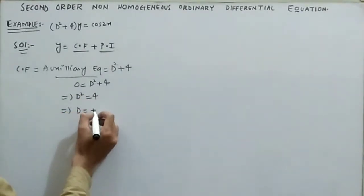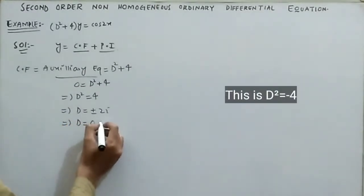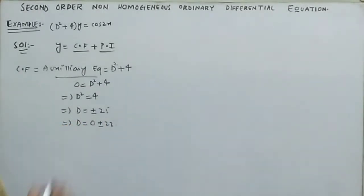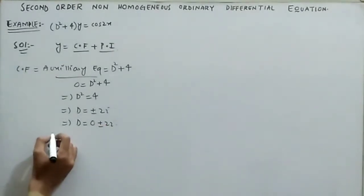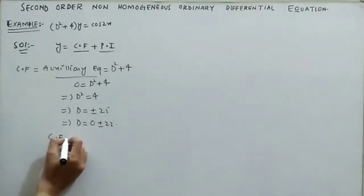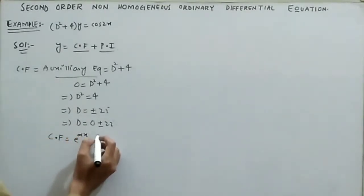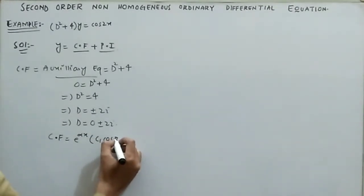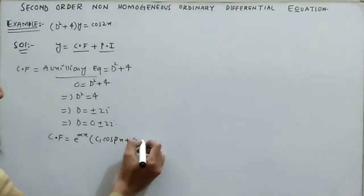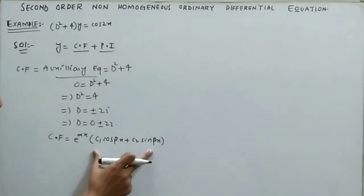From d² = −4, the required value of d is 0 ± 2i, which can be written in the form of a complex number: 0 ± 2i. When the roots are complex, the complementary function is: e^(αx) multiplied by (c₁ cos(βx) + c₂ sin(βx)).